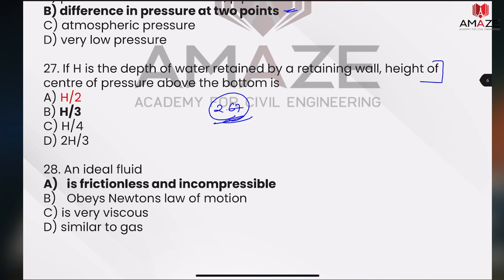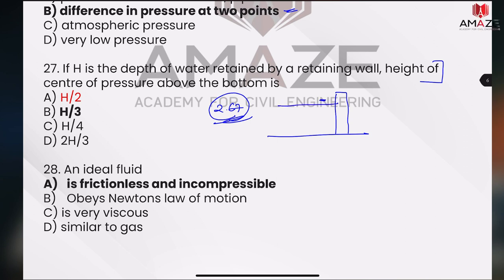If you look at the retaining wall — that's the pressure. If you look at the pressure distribution, it's a triangle. The triangle centroid is H by 3. If you look at the inclined vertical plane, we've got inclined.